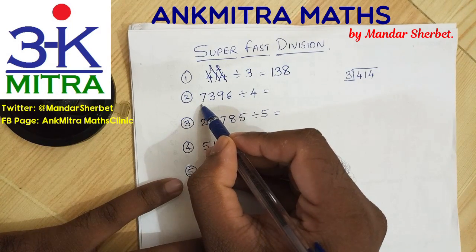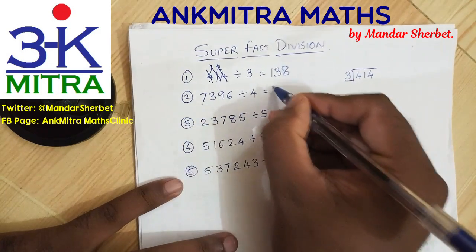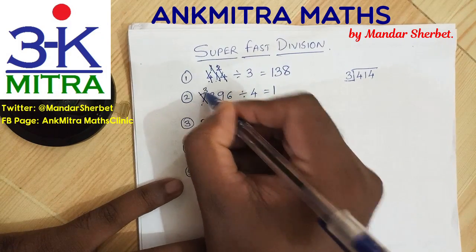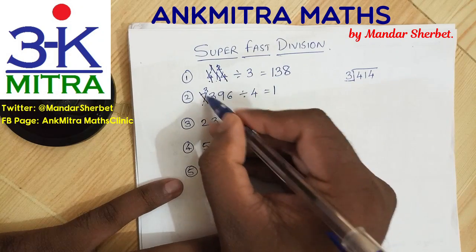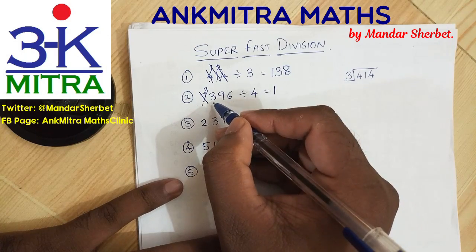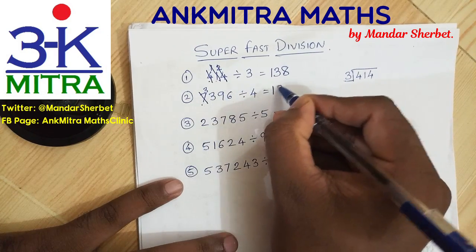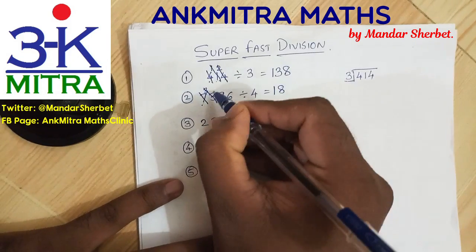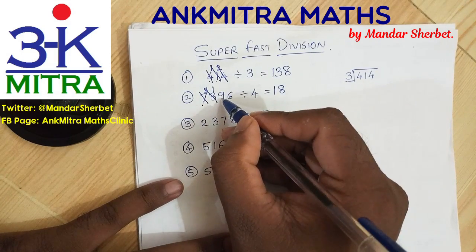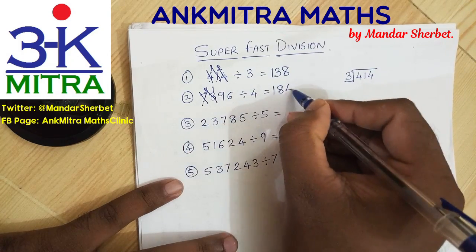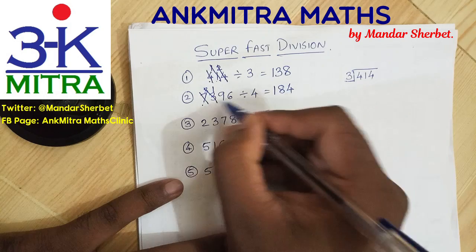The next example: 7396 divided by 4. We start from the left. The number is 7 — 1 times 4 can be subtracted, so we write down 1 in the answer. Subtracting 4, the remaining number is 3, so the next number becomes 33. 8 times 4 is 32 — we write down 8 in the answer. Subtracting 32, what remains is 1, giving us next number 19. 4 times 4 can be subtracted, so we write down 4.